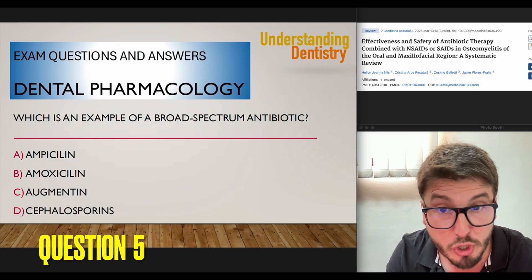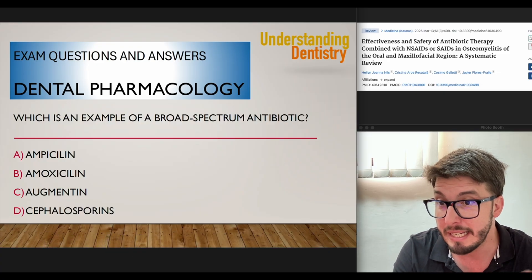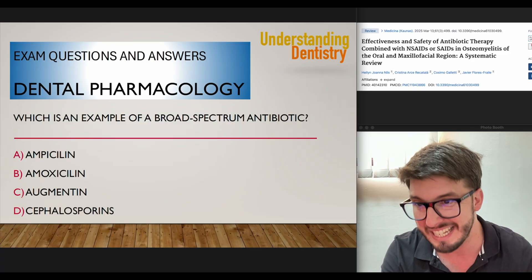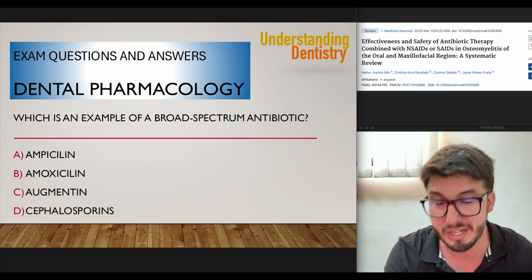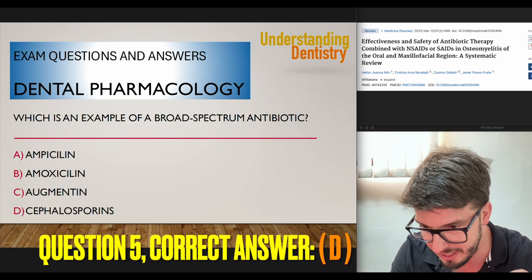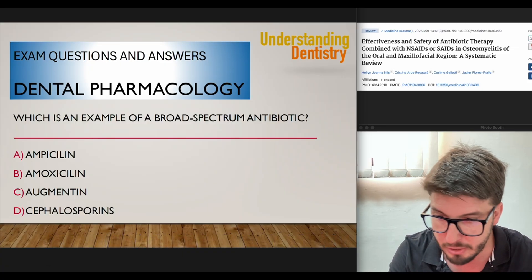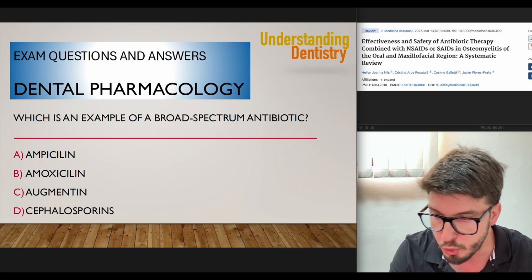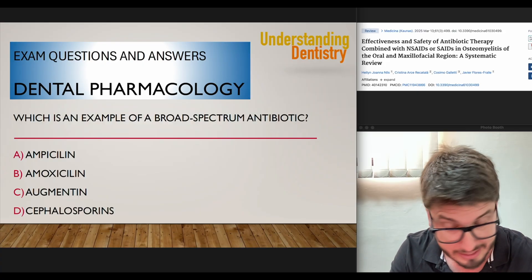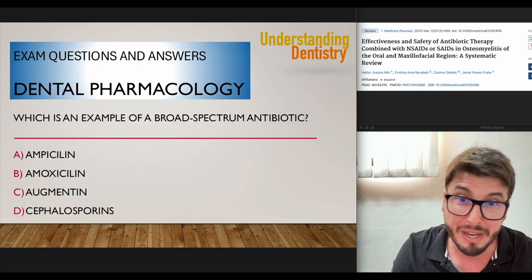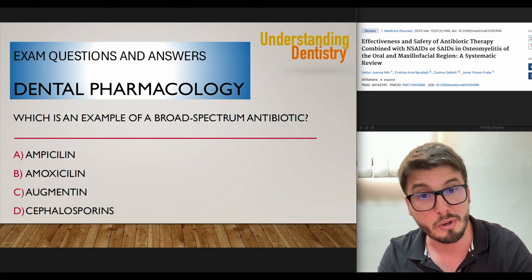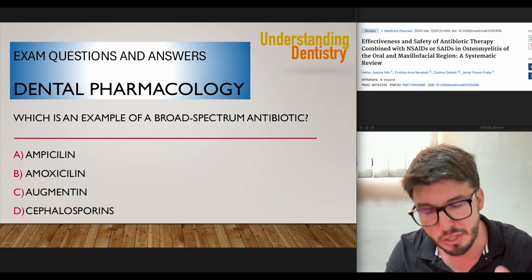Which is an example of a broad-spectrum antibiotic? Amoxicillin and augmentin are examples of penicillin, and penicillins are not broad-spectrum antibiotics — nor is ampicillin. The answer is cephalosporins. Those are the broad-spectrum antibiotics, often used to treat severe staphylococcal infections such as endocarditis. So the correct answer is letter D. Use this to complement your studies, and see you guys in the next video.